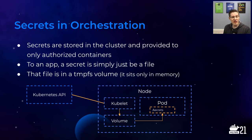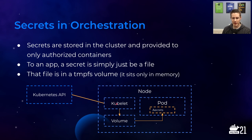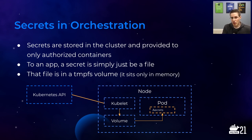Secrets in orchestration: secrets are typically stored within the cluster, encrypted at rest, and provided only to authorized containers. To an app, it's simply just a file that magically appeared. Pretty much every orchestration framework puts that file in a tmpfs volume, which means it sits only in memory and never actually touches the disk. In Kubernetes, the kubelet — the agent running on every node — when told to run a pod, gets the secret for that pod and puts it in a volume which is then mounted into the pod. If the secret value is updated, it updates the file on the volume, so the pod can get the updated secret without needing to restart.